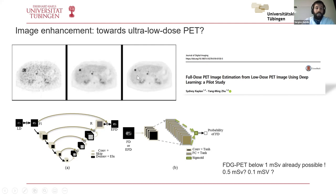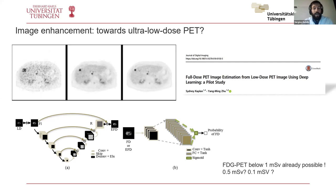At the moment it is possible to get PET images below one millisievert of radiation dose. Within the next years, we will likely see doses between 0.5 or even 0.1 millisievert. This means there will be a broader applicability of hybrid imaging — especially PET — also in young children and pregnant women, where dose really matters.